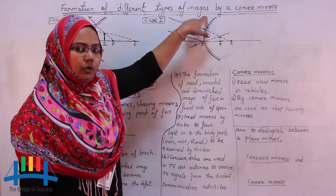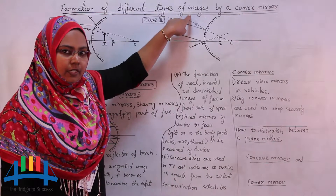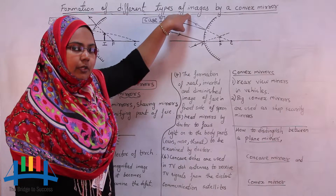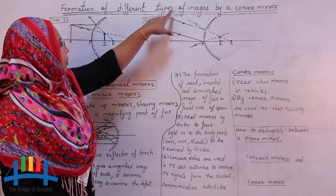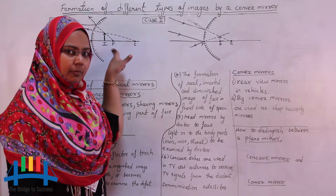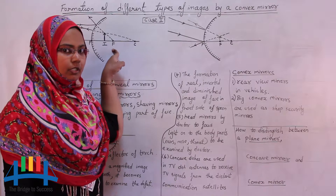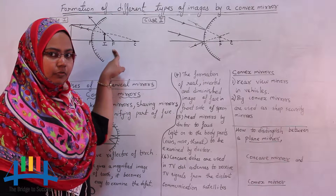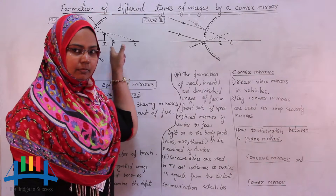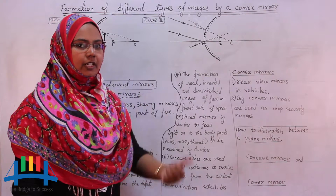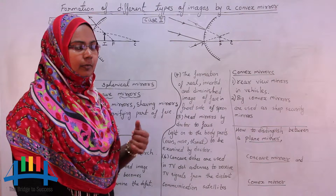As we all know, an image is formed only when two reflected rays actually meet or appear to meet. For drawing any ray diagram, you should be familiar with the four different kinds of rules used for the formation of images, which I have already discussed in my previous videos about the rules of convex mirror.